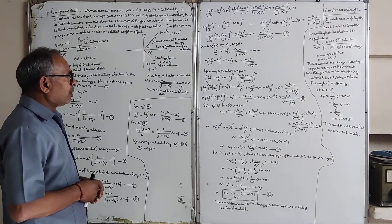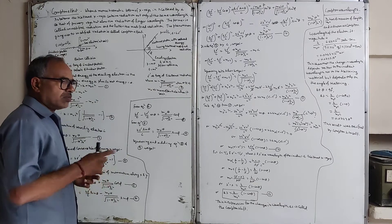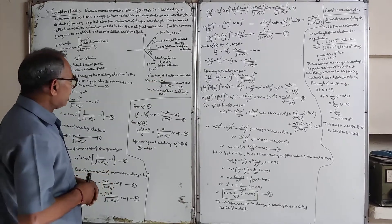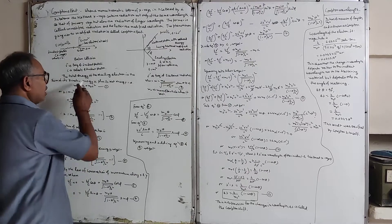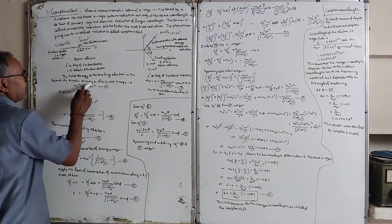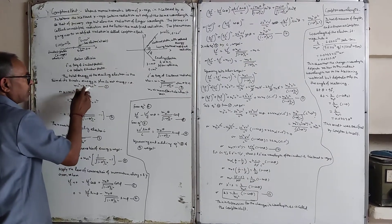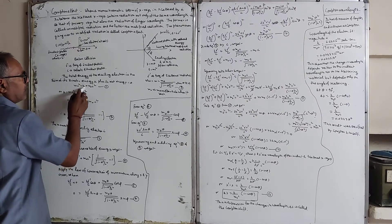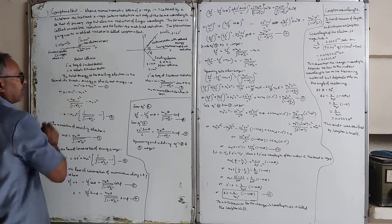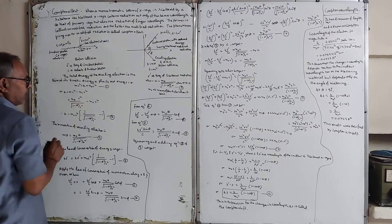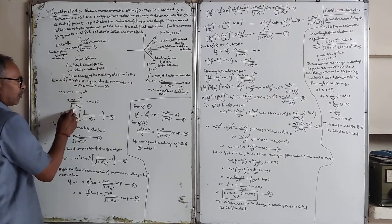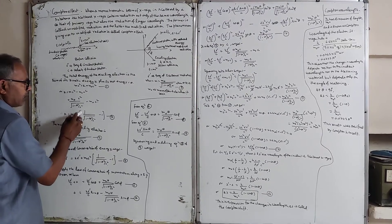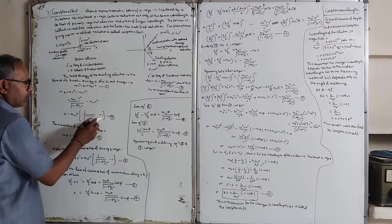The total energy of the recoiling electron is the kinetic energy k plus its rest energy m₀c². The kinetic energy k equals mc² minus m₀c², which gives k = m₀c² times (1 over √(1 − v²/c²) minus 1). The momentum of the recoiling electron is mv = m₀v divided by √(1 − v²/c²).